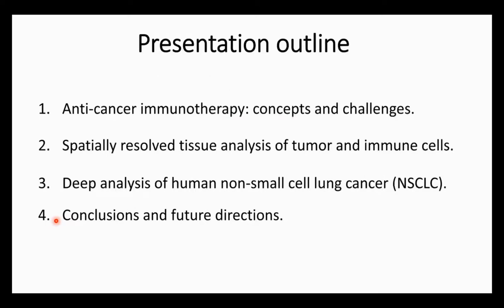In the next 25 minutes or so, we will discuss four general topics. First, we'll briefly analyze key concepts and challenges for anti-cancer immunotherapy and discuss how we may help overcome some of those challenges using analysis of human samples. In the second part, I will discuss data we have produced using spatially resolved tissue analysis to understand the tumor and immune composition of non-small cell lung cancers. In the third part, I will share advances using extended panels to interrogate both tumor and immune cells simultaneously using imaging mass cytometry. And I will close with conclusions and future directions.